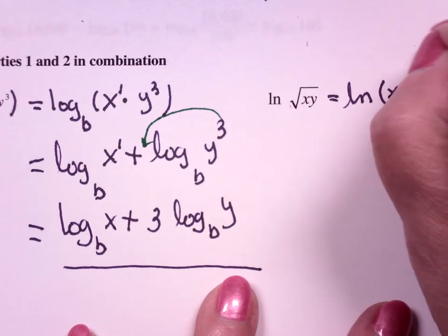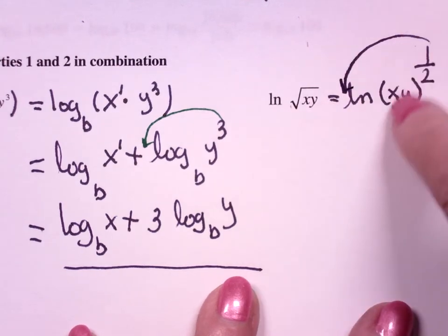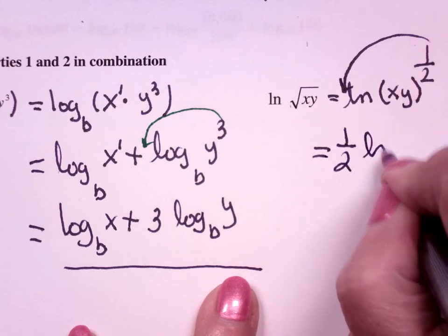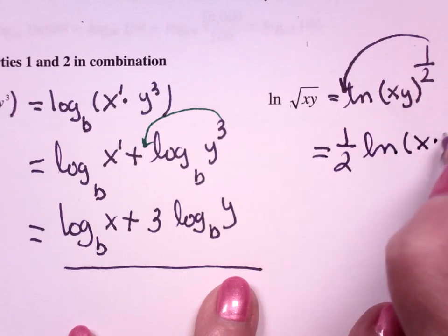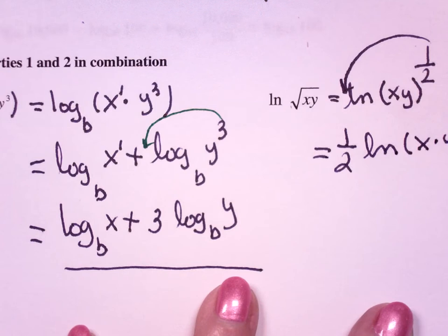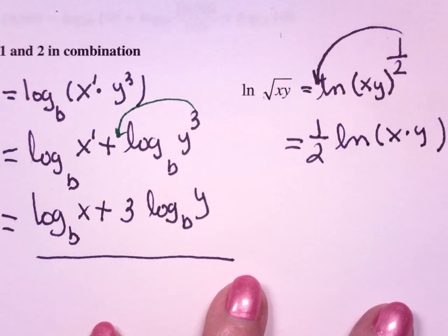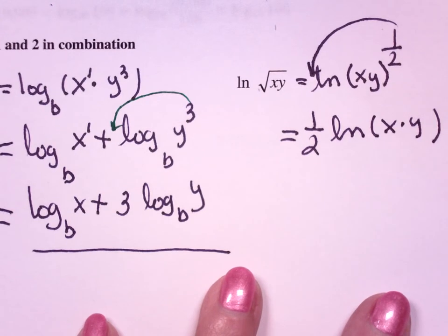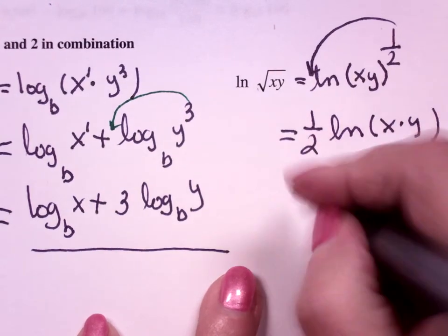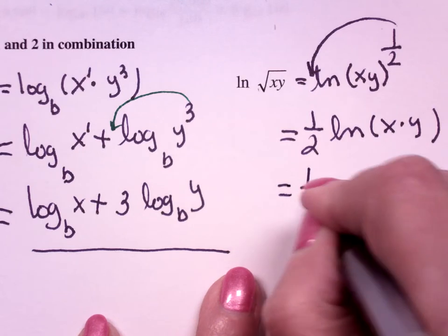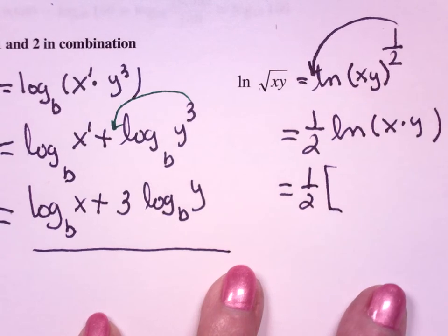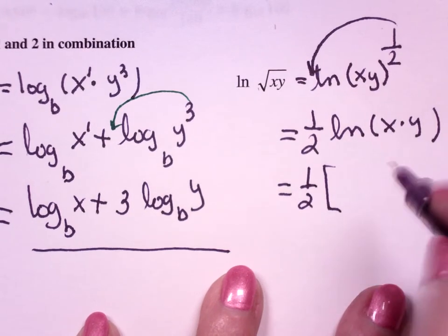So now, I just have to bring this down in front, because in that set of parentheses, x and y are captured. Now this is where you have to be very careful of detail, because this is a product. But 1/2 is going to multiply this whole thing when I expand it, and it expands into two pieces.